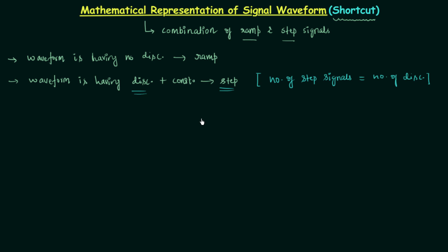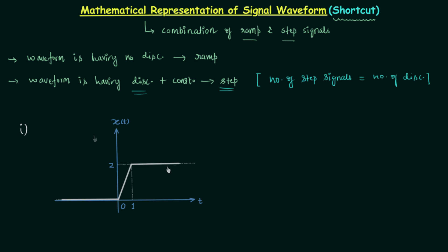These points will be very clear when we solve two or three examples. In the first example I will take a signal waveform representable using only ramp signals. The signal x(t) has a waveform with no discontinuity, so we can represent it in terms of ramp signals only, as stated in condition one.